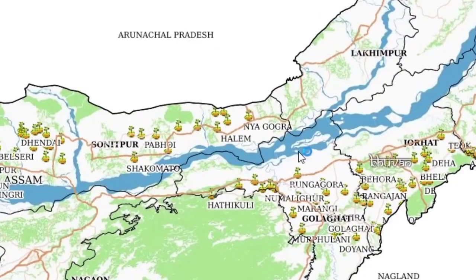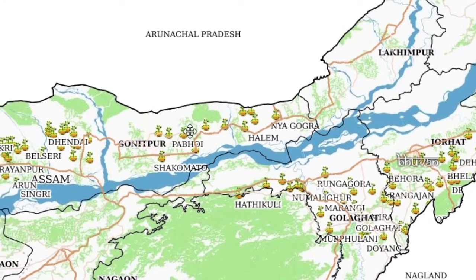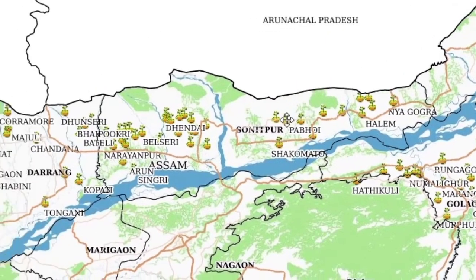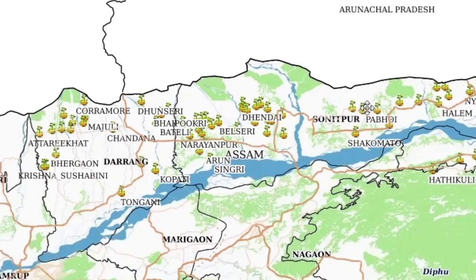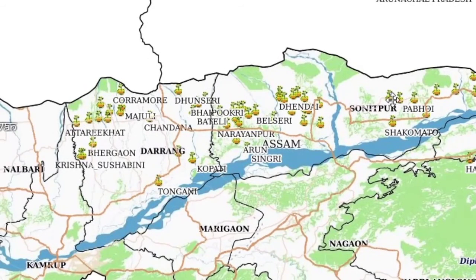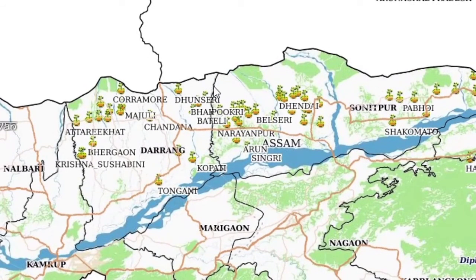Now this is the northern part of river Brahmaputra. There we can see Sonitpur, Biswanath, Darrang, and Nalbari as the highest tea growing areas of Assam.